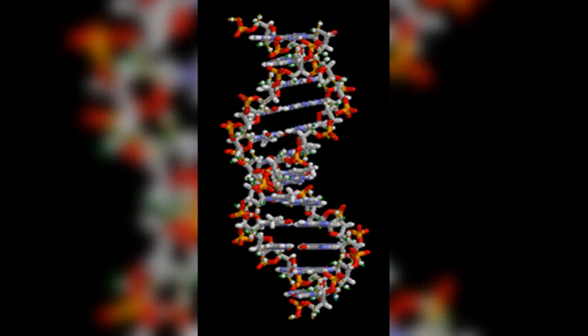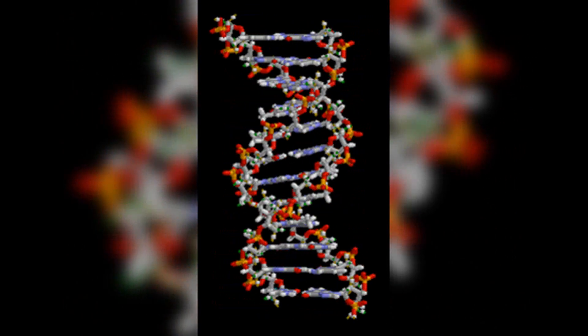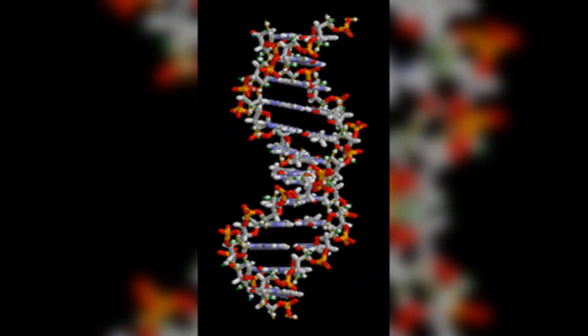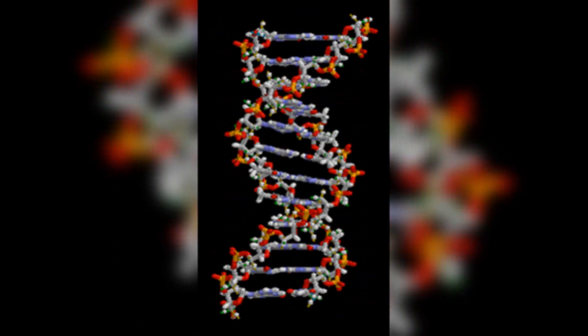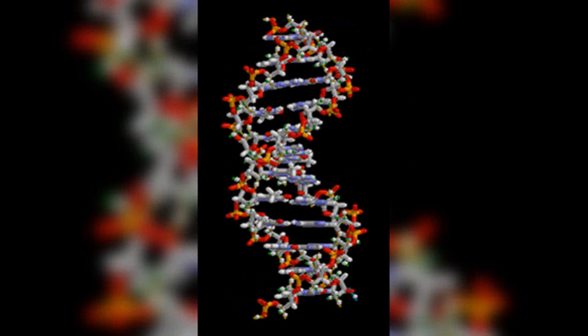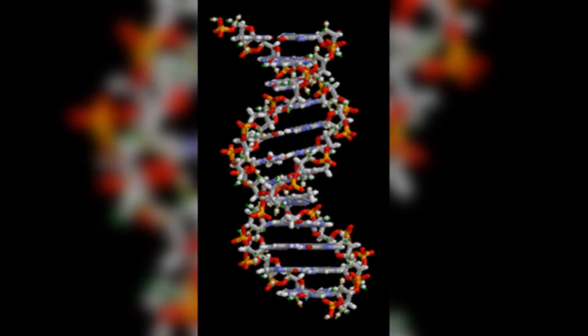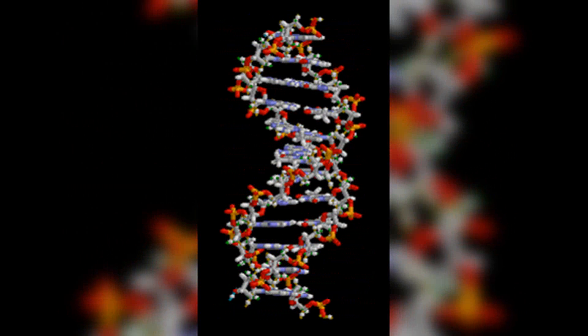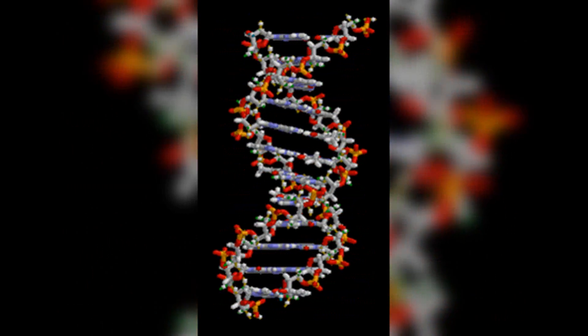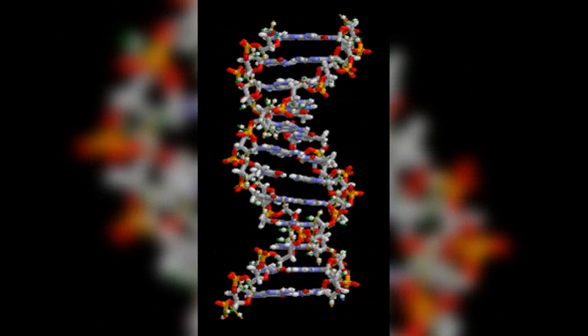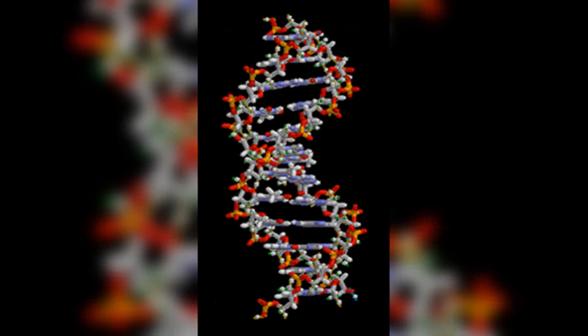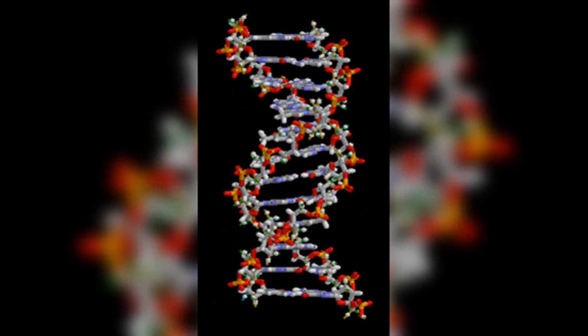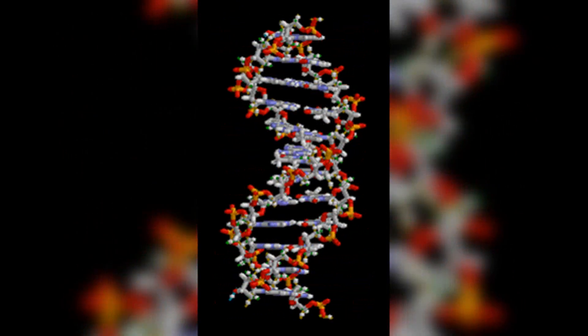Junk DNA is a term that was historically used to refer to non-coding regions of DNA that were thought to have no functional purpose. These regions do not code for proteins or have known regulatory functions. However, the term junk DNA is now considered outdated and misleading because research has shown that many non-coding regions of DNA have important biological roles. It is now understood that the non-coding regions of DNA, which constitute a significant portion of the genome in many organisms, serve various functions.